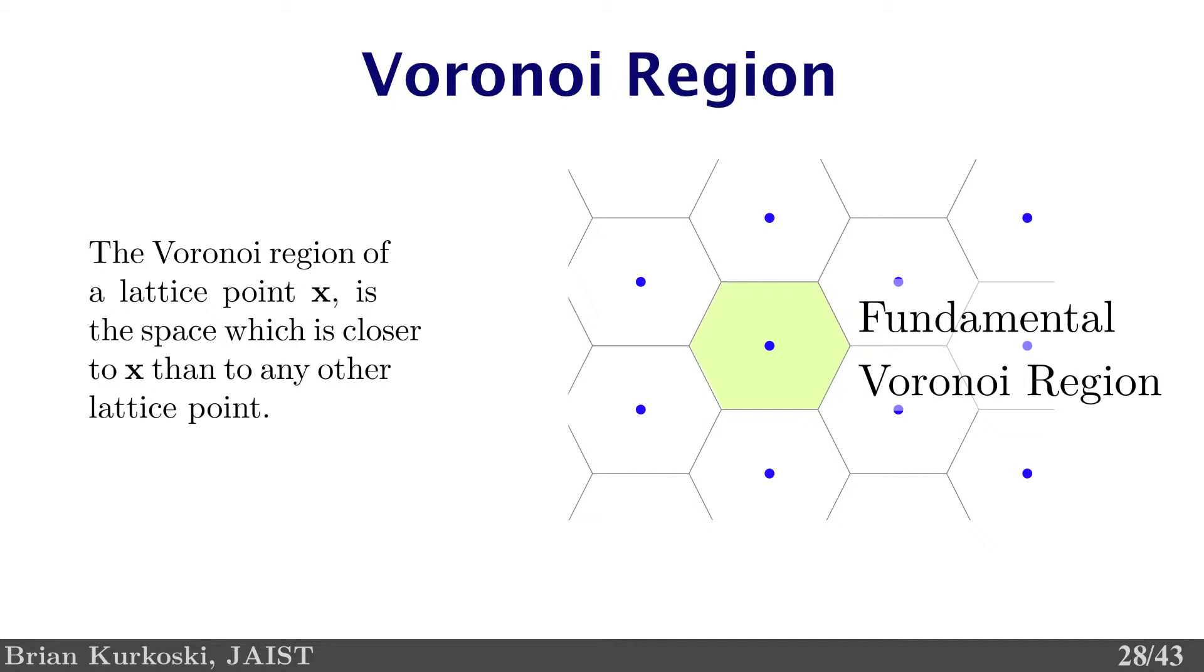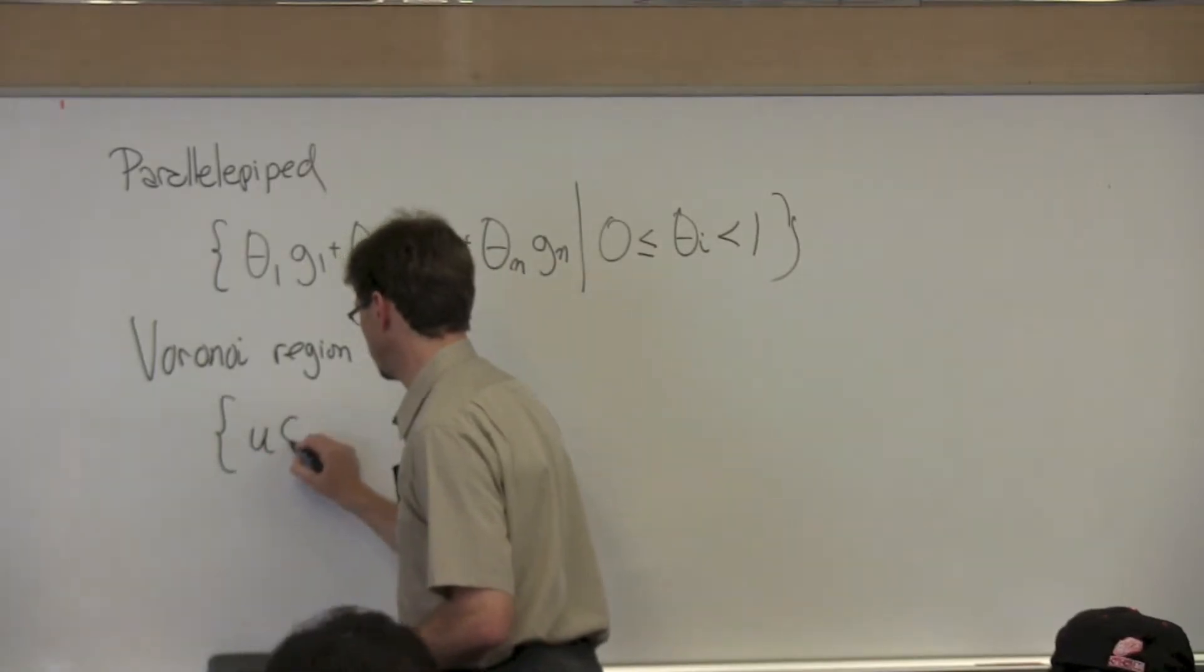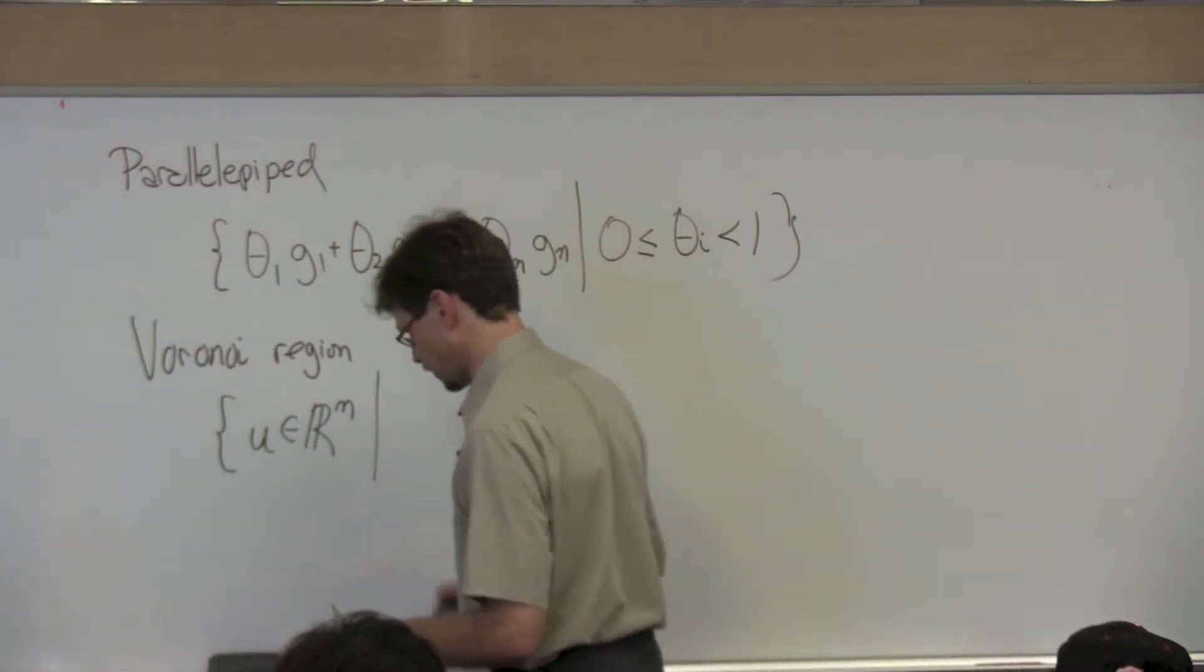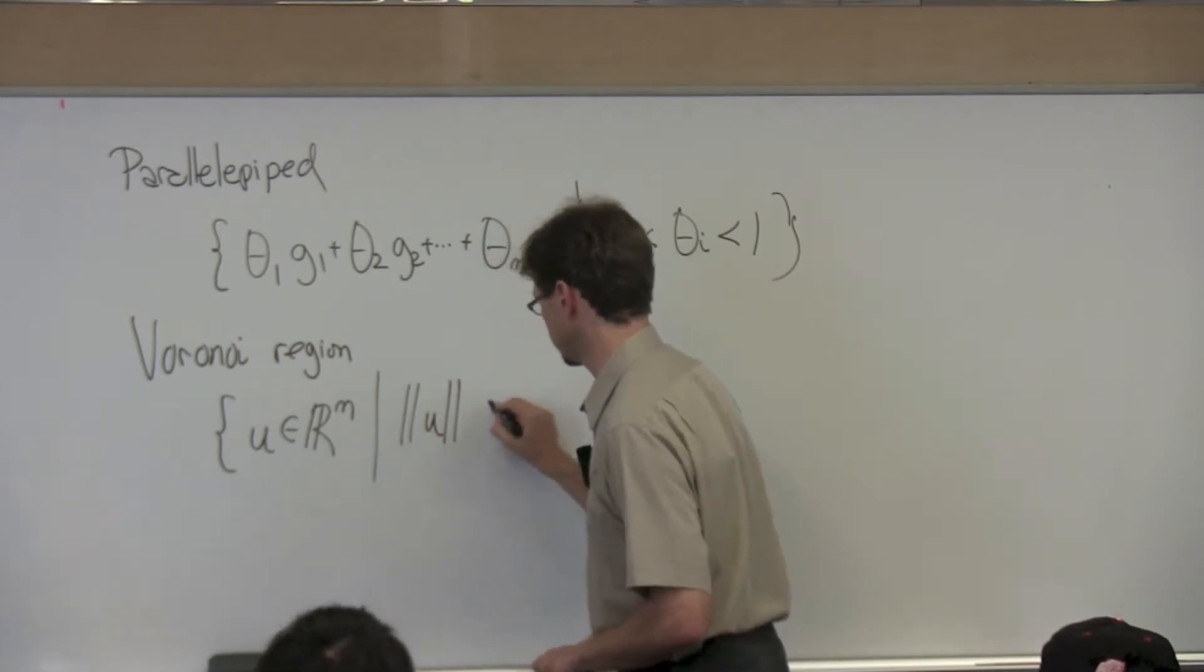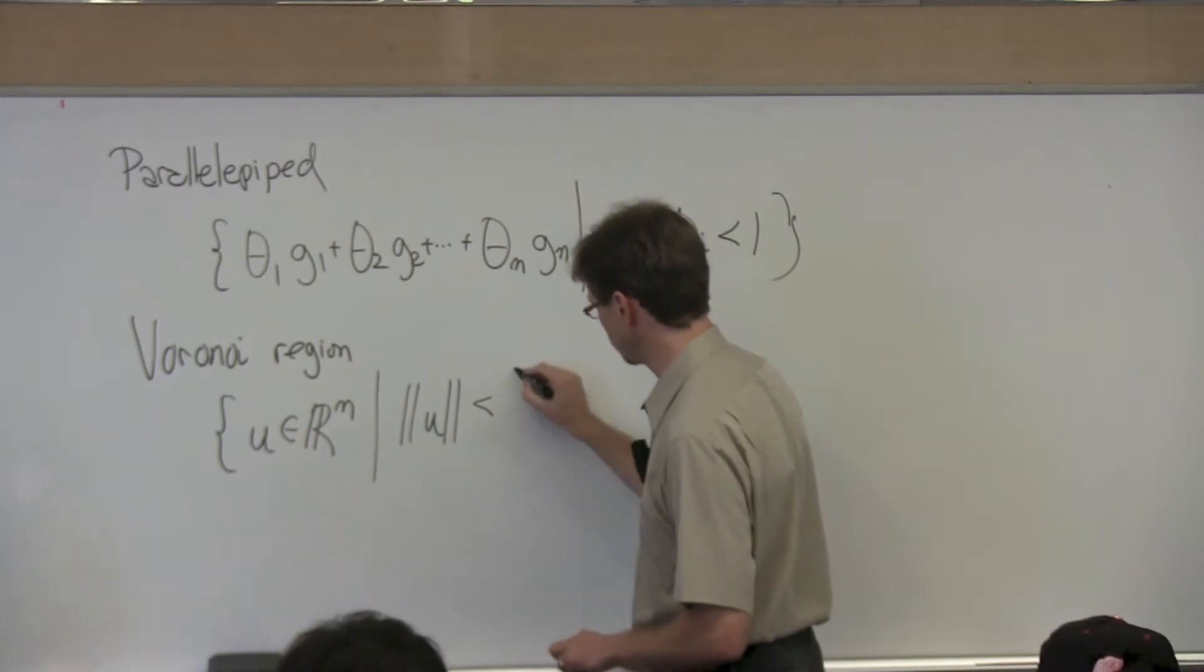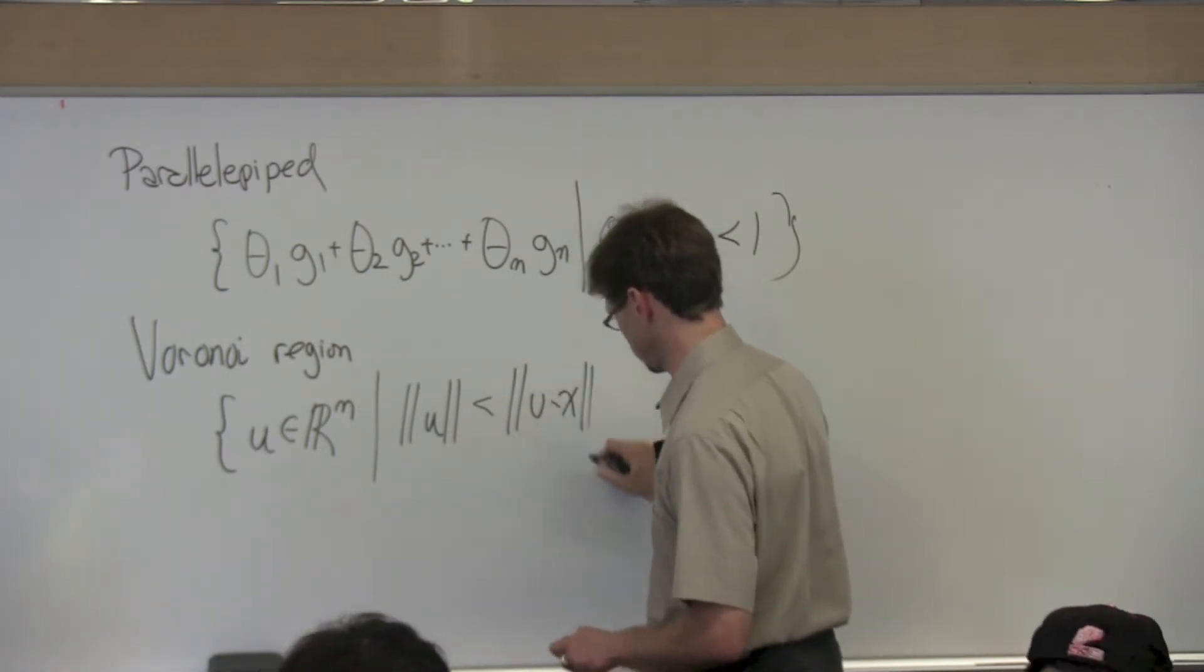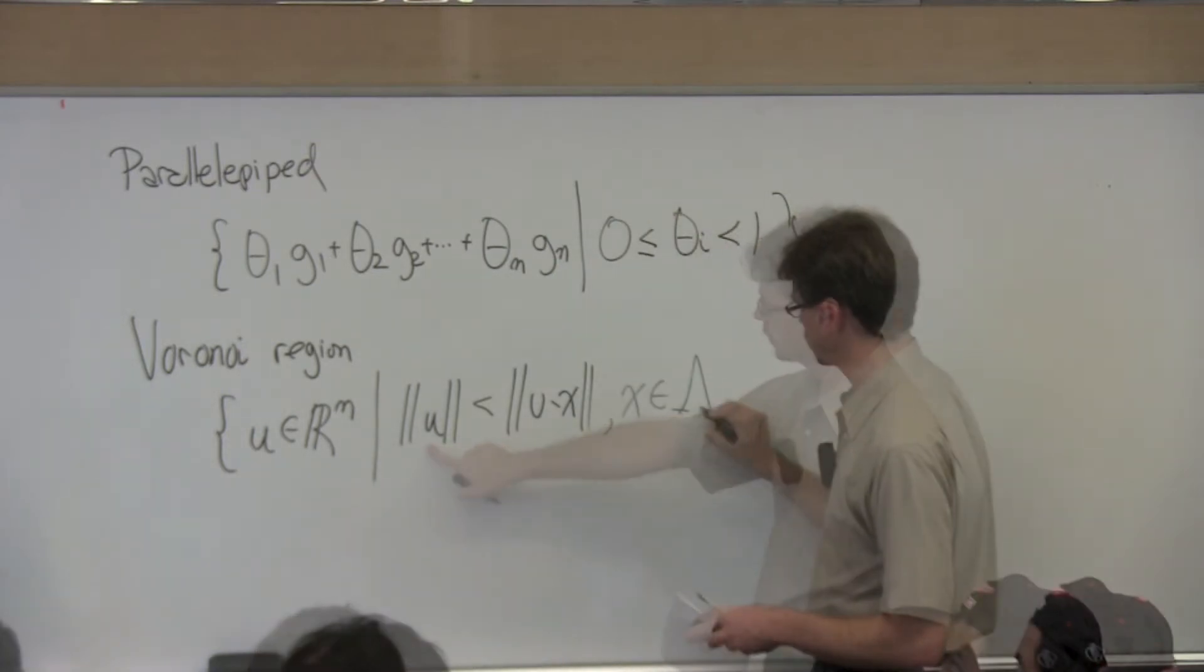So here we have the hexagonal lattice, and we're looking at the fundamental region for one of its points, the set of all the points such that the Euclidean distance from u to x is smaller than to other lattice points.